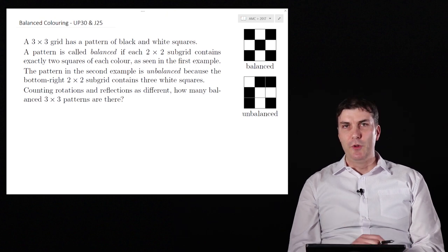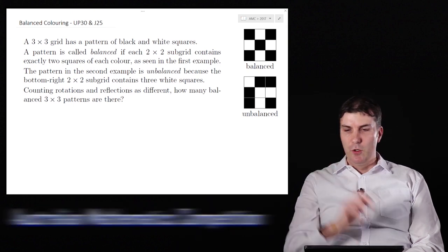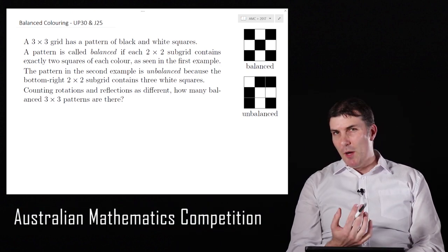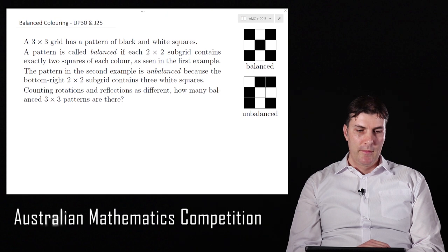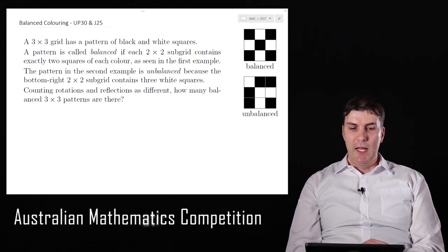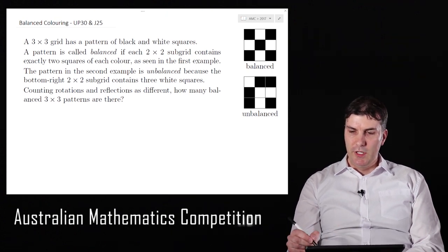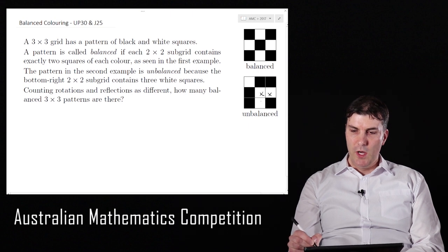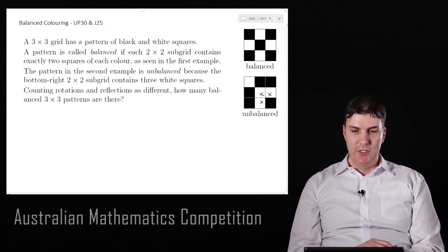So that's exactly the chessboard that we're talking about, and every one of those little 2x2 grids has a diagonal with black and a diagonal with white, but there might be some others that we're interested in finding. The pattern in the second example is unbalanced because of the bottom right hand corner, so you can see here that we've got three white squares and only one black, which is no good.